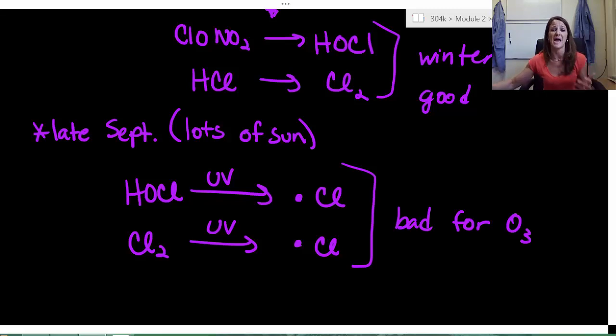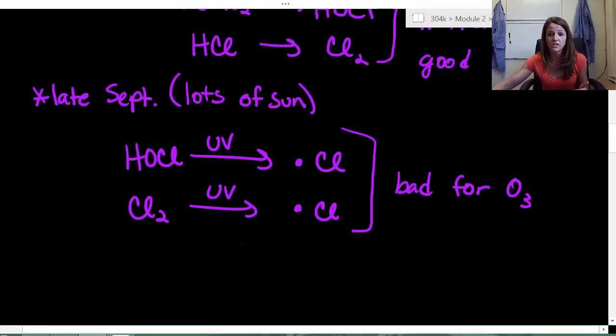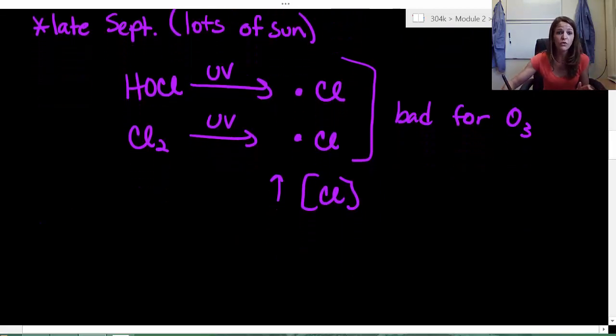So one chlorine radical can actually destroy 100,000 ozone molecules. They're really, really bad. So in late September in the South Pole, all of a sudden we start to have a huge increase of our concentration of chlorine in our stratosphere. So that's a big problem.